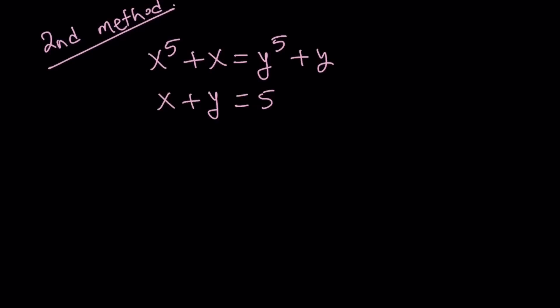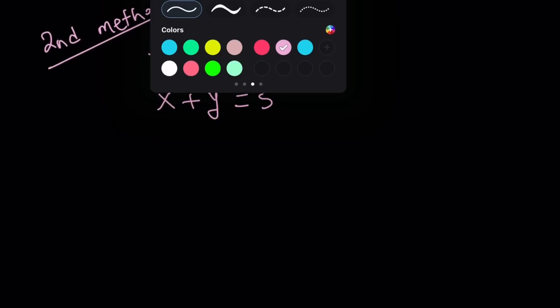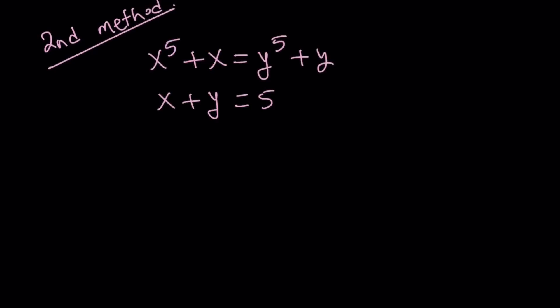So what do we do? Instead of substituting, obviously substitution leads to a big issue with the quintic, we're going to do the following. We're going to pay attention to the first equation, this one. And we're going to consider the function, the following function, whose graph I'm going to show you: F of t equals t to the 5th plus t.